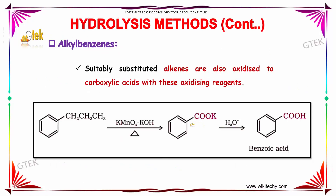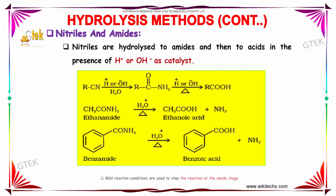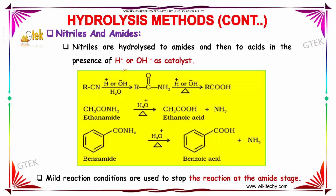Suitably substituted alkenes are also oxidized to carboxylic acids with these oxidizing agents. That is, when an aromatic compound is made to react with KMnO4, KOH, and heat, it produces an intermediate which on further hydrolysis gives benzoic acid. Nitriles are hydrolyzed to amides and then to acids in the presence of H+ or OH- as a catalyst.